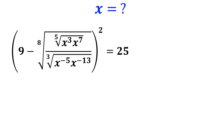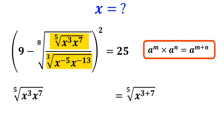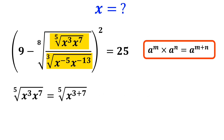To solve this kind of question, first we need to simplify these two radicals that I have highlighted. According to the rules of exponents, a to the power of m times a to the power of n is equal to a to the power of m plus n. So instead of the expression fifth root of x to the power of 3 times x to the power of 7, we can write fifth root of x to the power of 10. The power of 10 cancels out with the fifth root and it simplifies to x squared.